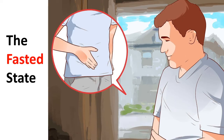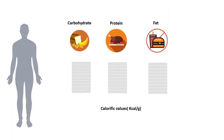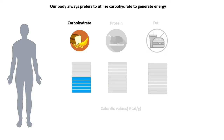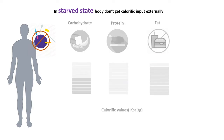In this video we're going to talk about the fasted state. Our body gets food input in terms of carbohydrate, protein and fats. In contrast to carbohydrate and proteins, the calorific value of fat is more. But even so, our body would preferably use carbohydrate as a source to generate energy. But in case of fasting, we don't have any calorific input, so all of these sources are not available and nutrients are limiting. Let's look at what changes happen during the fasted state.